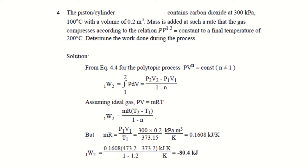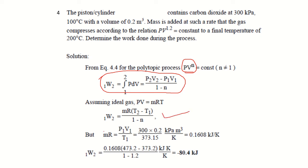Example 4: A piston-cylinder contains CO2 at 300 kPa, 100°C with volume 0.2 m³. Mass is added such that the gas compresses according to the law PV^1.2 = constant to a final temperature. The work done for a polytropic process is given by W = (P2V2 - P1V1)/(1-n) = mR(T2-T1)/(1-n). Since PV = mRT, we can find mR from the initial conditions and substitute to determine the work done.